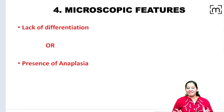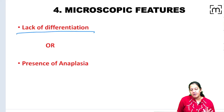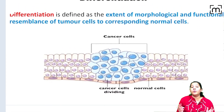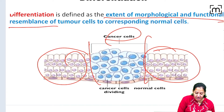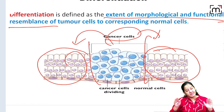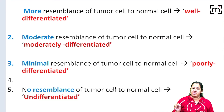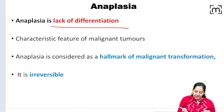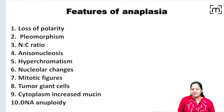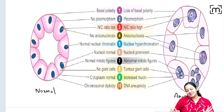Based on microscopic features, malignant tumours show a lack of differentiation known as anaplasia. Differentiation refers to the extent of morphological and functional resemblance of the tumour cell with the native normal cell. A tumour may be well differentiated, moderately differentiated, or poorly differentiated depending on how many tumour cells resemble normal tissue. Lack of differentiation is anaplasia, which is the hallmark of malignant tumours and is irreversible. There are 10 features of anaplasia.